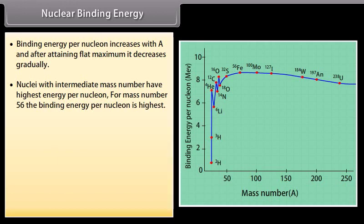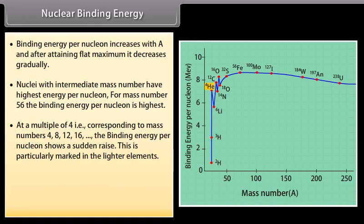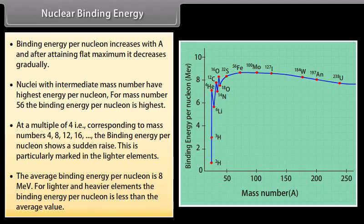From the graph we note that binding energy per nucleon increases with A and after retaining flat maximum it decreases gradually. Nuclei with intermediate mass number have highest energy per nucleon. For mass number 56 the binding energy per nucleon is highest. At a multiple of 4, that is corresponding to mass numbers 4, 8, 12, and 16, the binding energy per nucleon shows a sudden raise. This is particularly marked in the lighter elements. The average binding energy per nucleon is 8 MeV. For lighter and heavier elements the binding energy per nucleon is less than the average value.